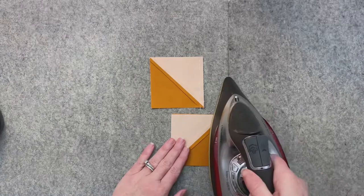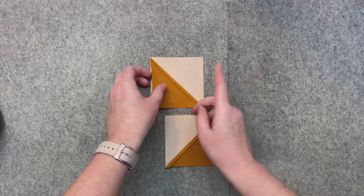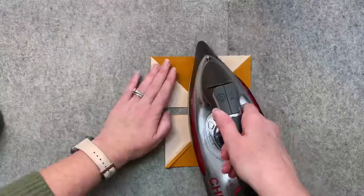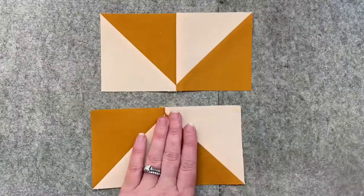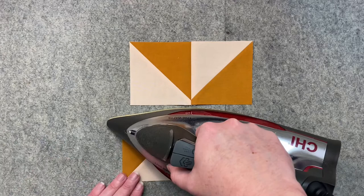And then one seam of the row needs to go this way and the other row needs to go that way, so this one will go this way, so I'm just going to press. And then on this seam I'll press it this way. And again, I'm not raking that iron over the fabric, I am just up and down.